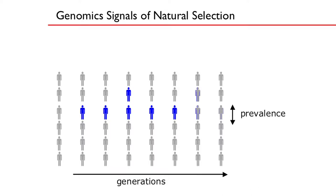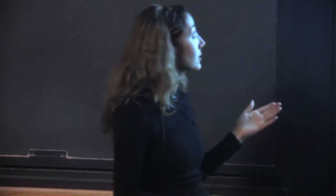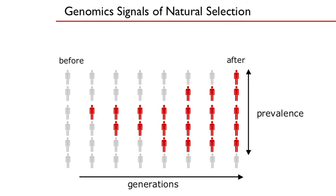Whether a mutation disappears or continues to rise, it takes a very long time to achieve high prevalence in the population. Now let's think about selection. You have a mutation that enhances the survival or reproductive success of the person who carries it. That mutation is somehow beneficial, so that person is more likely to survive and reproduce, passing on the mutation to their children. What happens is it rises in prevalence in a short period of time.